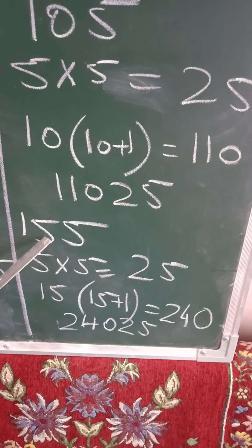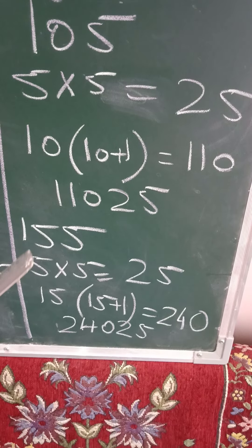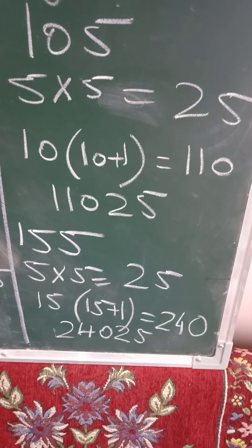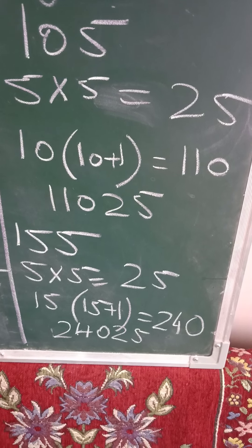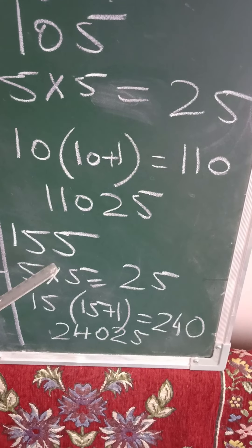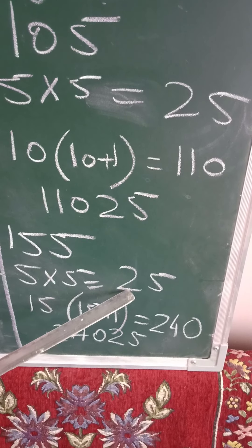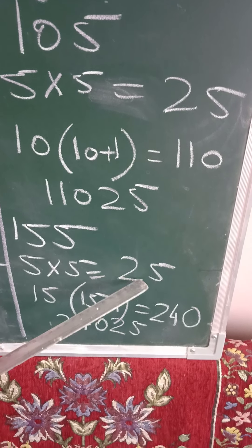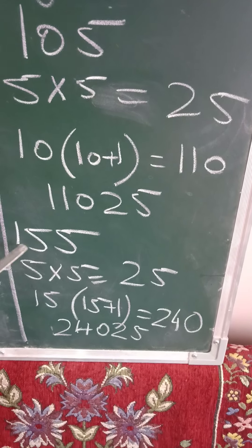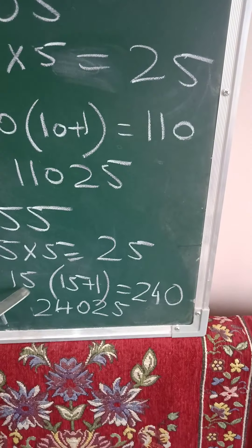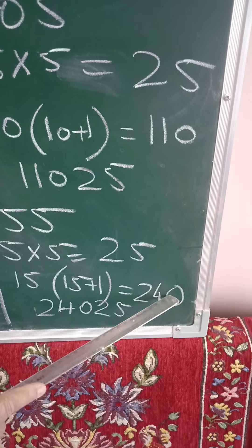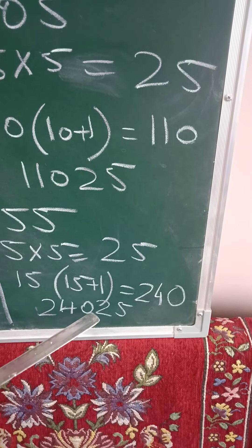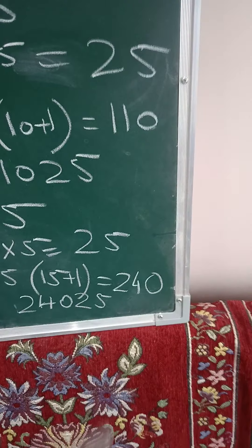Next sum, 155. Now if you just think in your mind, before knowing this trick, 155 you will find it difficult. But as now you know this trick, you know that 5 square is 25 or you can say 5, 5 is 25. And then 15. The next number is 16. 15, 16 are, 16s are 240. So 24025.